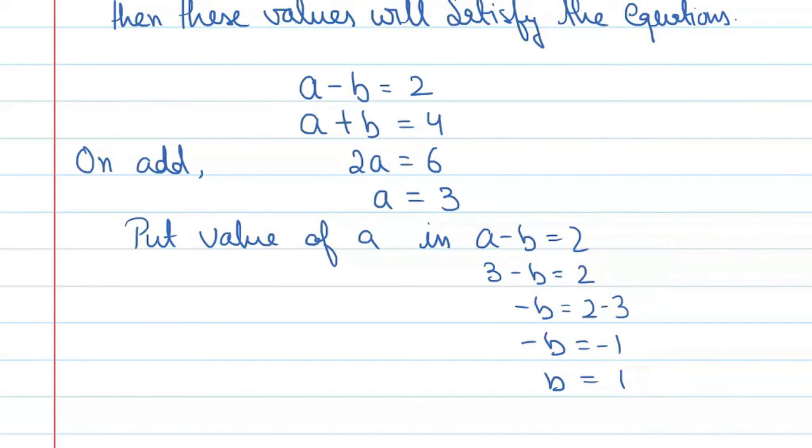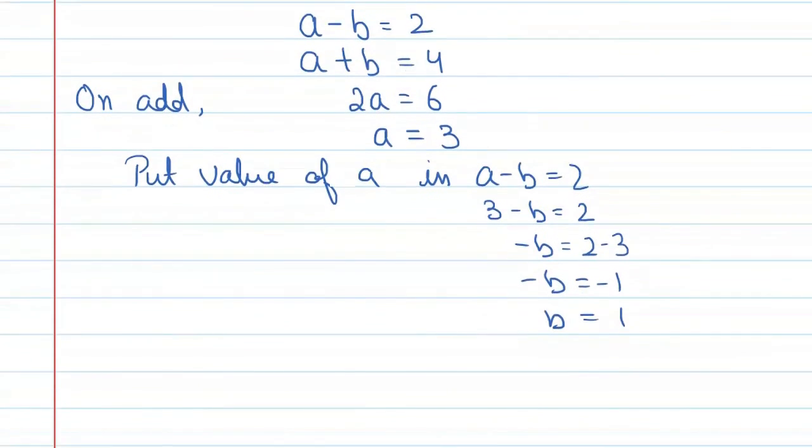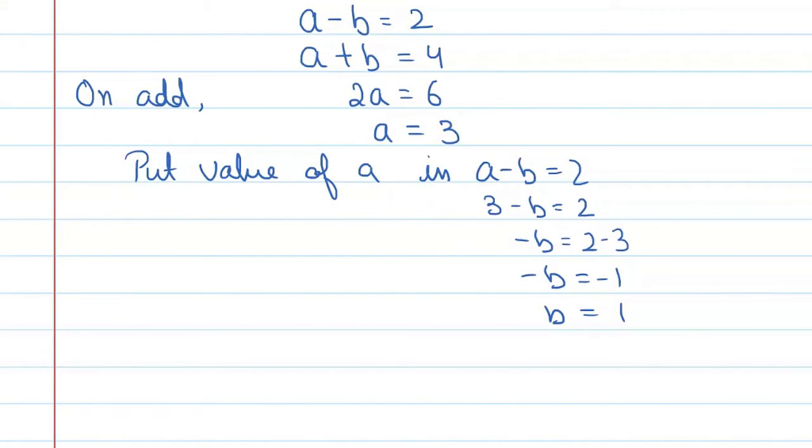Alright, so here we can say our final answer. We can say therefore a is equal to 3 and b is equal to 1, and the correct option is C. Alright, thank you.